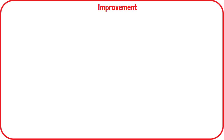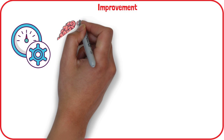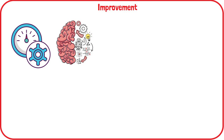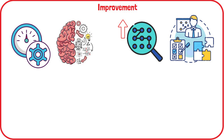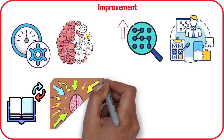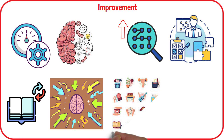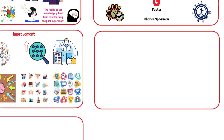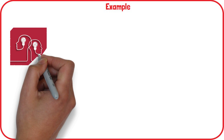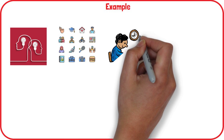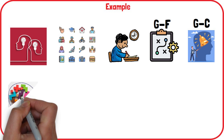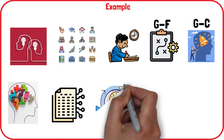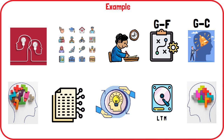Recent research suggests that aspects of fluid intelligence, such as processing speed, can be improved through brain training. Cognitive training enhances reasoning and problem-solving skills beyond previously acquired knowledge. Crystallized intelligence can be improved through continued learning and accumulating knowledge. Engaging in new experiences and learning activities can enhance both types. In daily life, for example, solving a psychology exam question might require fluid intelligence to strategize and crystallized intelligence to recall specific formulas. Fluid intelligence also helps transfer information into long-term memory, which then becomes part of crystallized intelligence.